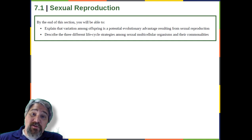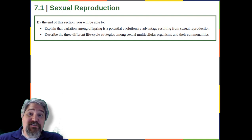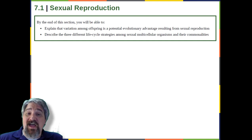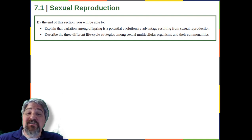However, multicellular organisms that exclusively depend on asexual reproduction are exceedingly rare. Why is sexual reproduction so common? This is one of the important questions in biology and has been the focus of much research from the latter half of the 20th century until now. A likely explanation is that the variation that sexual reproduction creates among offspring is very important to the survival and reproduction of those offspring.